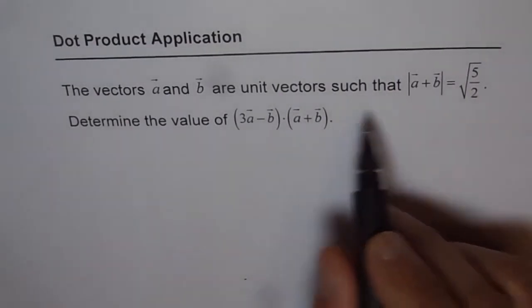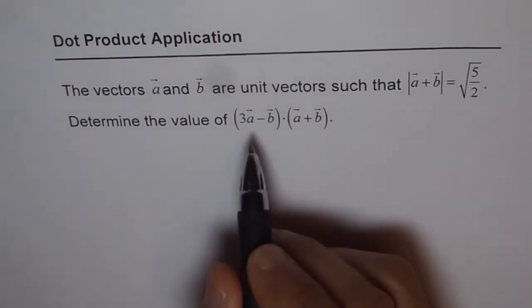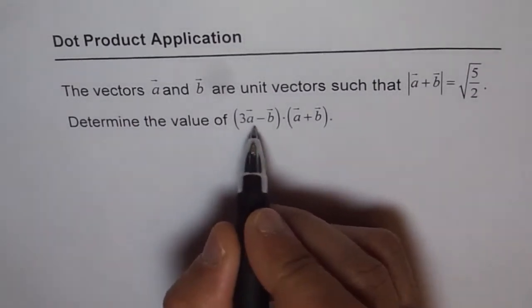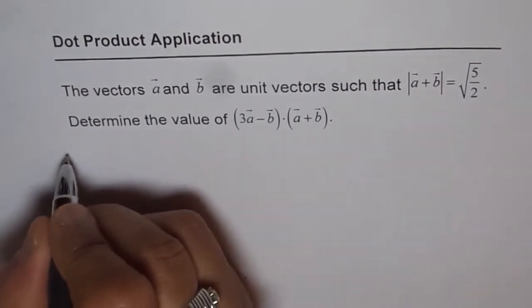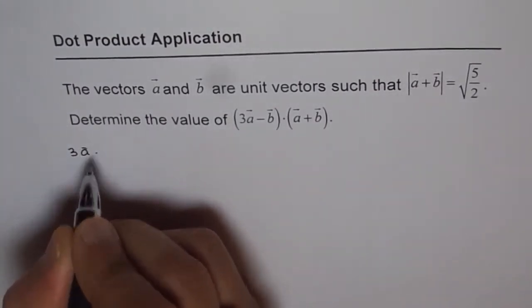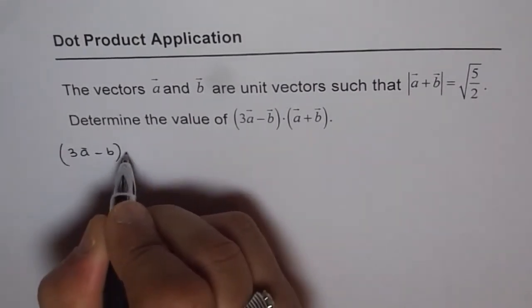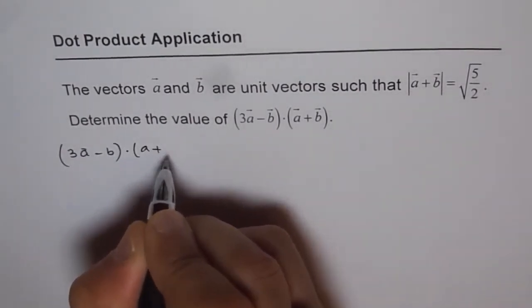Now, to do these kinds of questions, we should know what is a dot b. So we can start from here also and then get to that. Let me show you. If you can straight away start here, you'll write 3a minus b dot of a plus b.